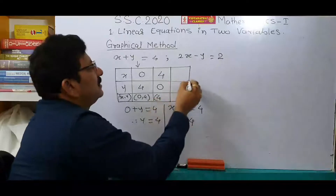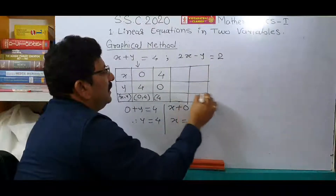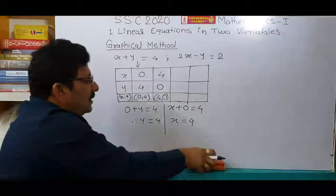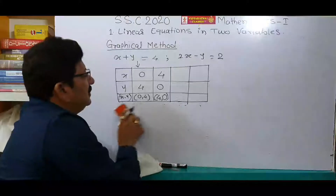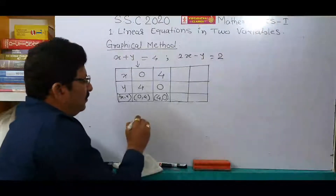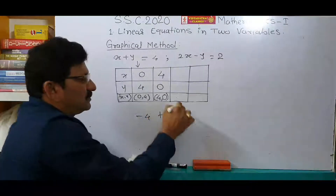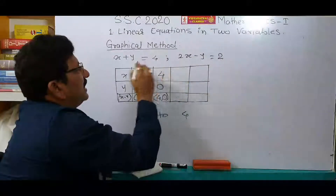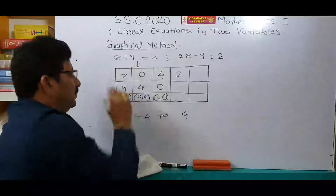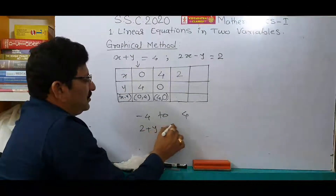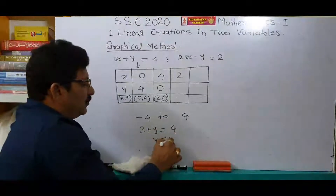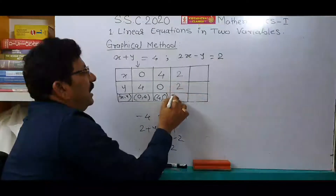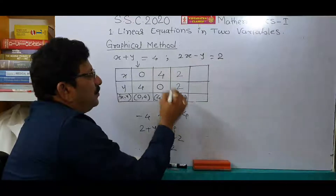Now we have to find out the two remaining ordered pairs. For that, you can consider any value between minus 4 to 4 for x or y — it is your choice. Here I am considering x is equal to 2. Put 2 in place of x in the given equation. By transformation, y is equal to 4 minus 2, that is y is equal to 2. Therefore, the ordered pair is (2, 2).